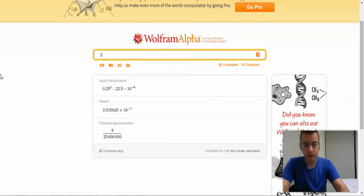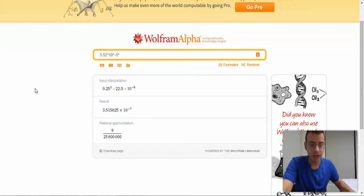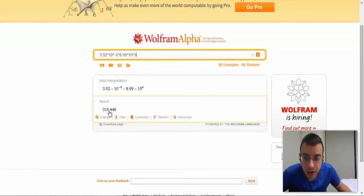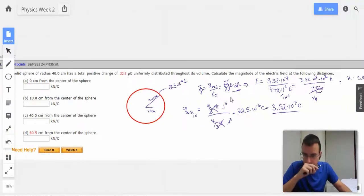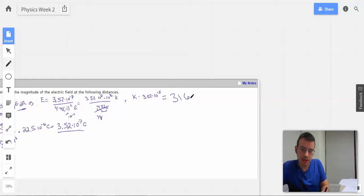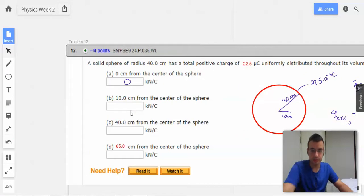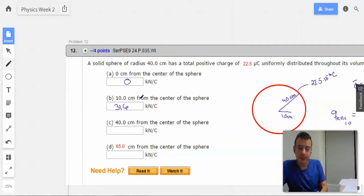Now give us the answer. 3.52 times 10 to the negative 5th times k, which is 8.99 times 10 to the 9th. That's going to give us a big answer. 3.16 times 10 to the 3rd. Equals 3.16 times 10 to the 3rd. So here then, this is electric field, so it'll be newtons per coulomb. But this part right here, the 10 to the 3rd, will make it 3.16 kilonewtons per coulomb. Kilo means 1,000, i.e. 10 to the 3rd. So 3.16.